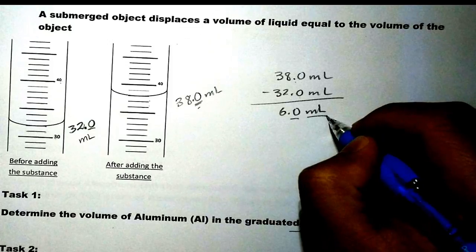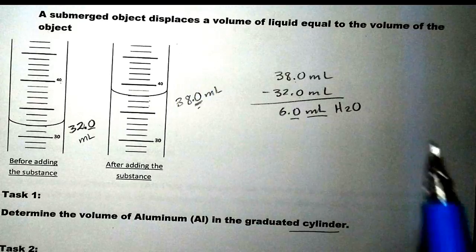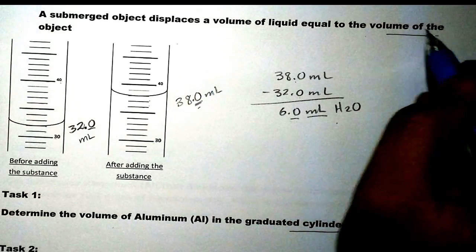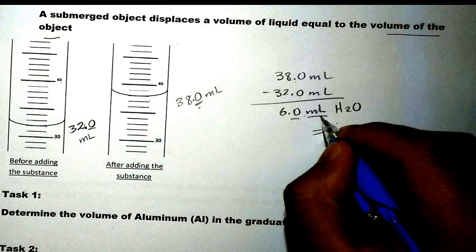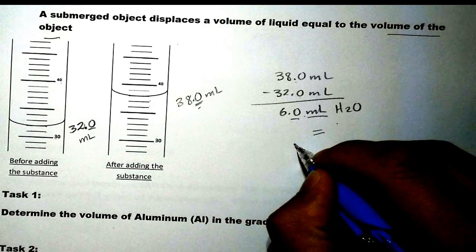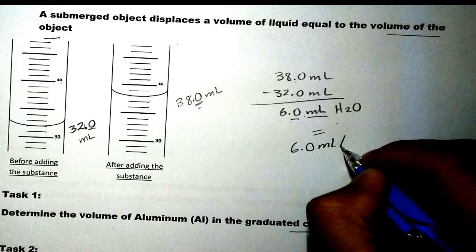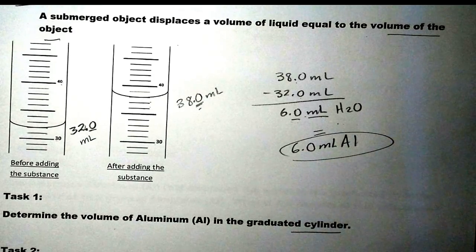Now, the volume of what? In this case, specifically, it is the volume of water that we are looking at. But we also know that the volume of water being displaced is equal to the volume of the object. So this is also equal to the volume of the object, or the substance. In this case, it is aluminum, 6.0 mL aluminum.